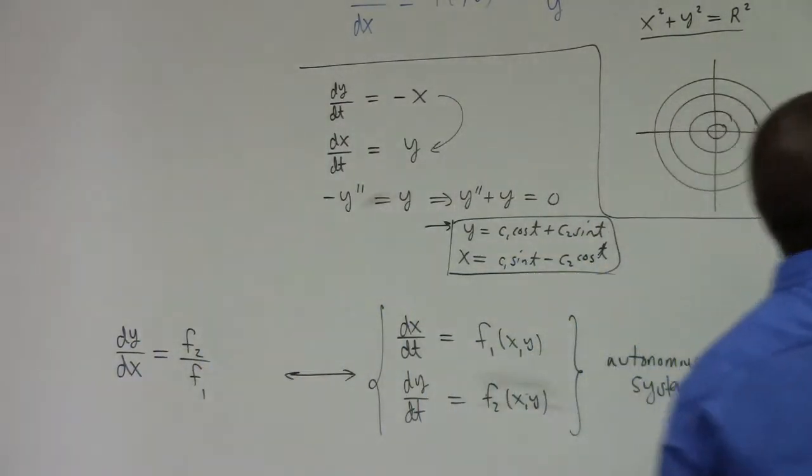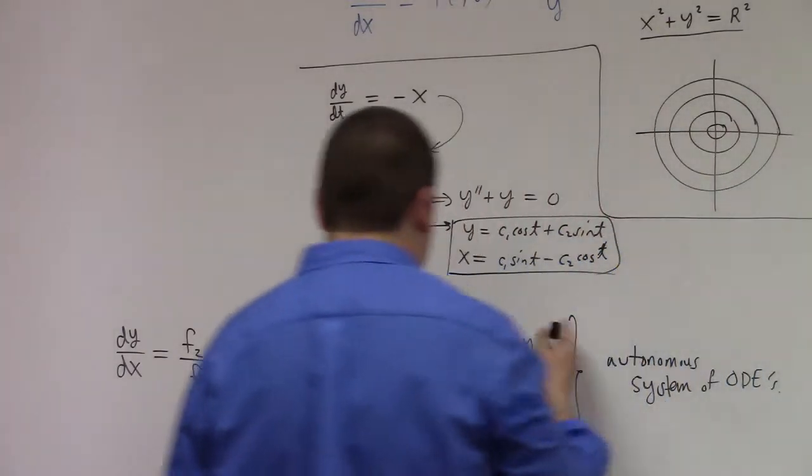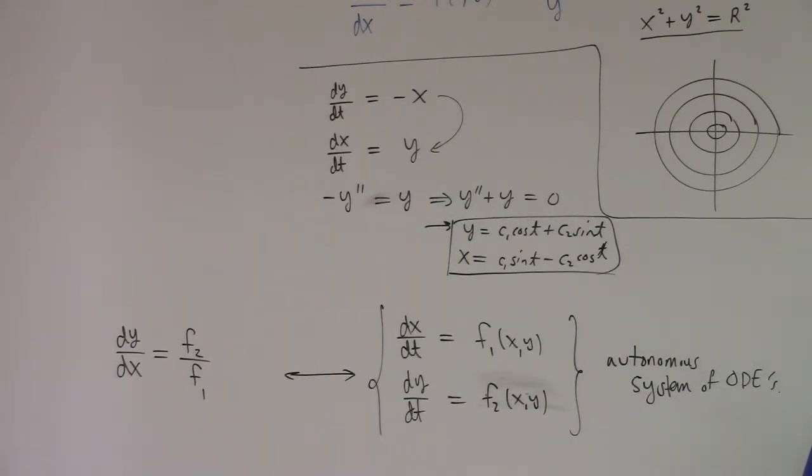So you have this interplay. For example, one of the places where this is interesting to look at: when f1 and f2 are just linear, then we know how to solve it. Like, for example, if we have dx/dt equals x plus y, and dy/dt equals 2x plus 2y.